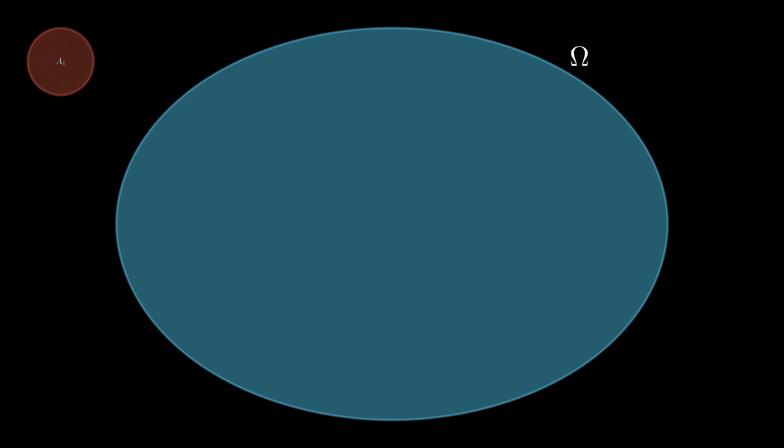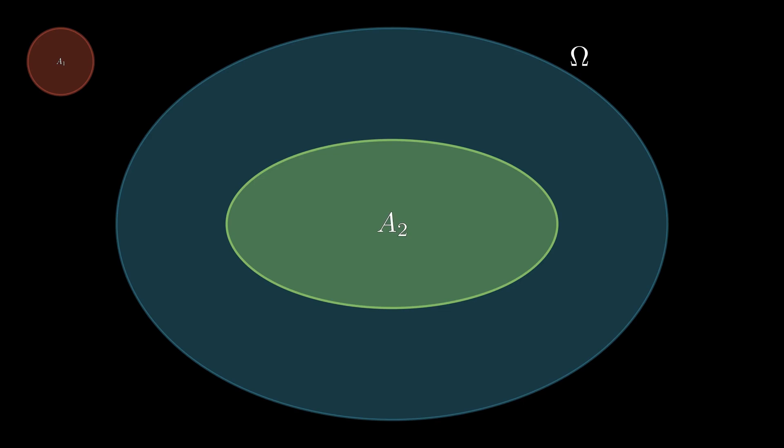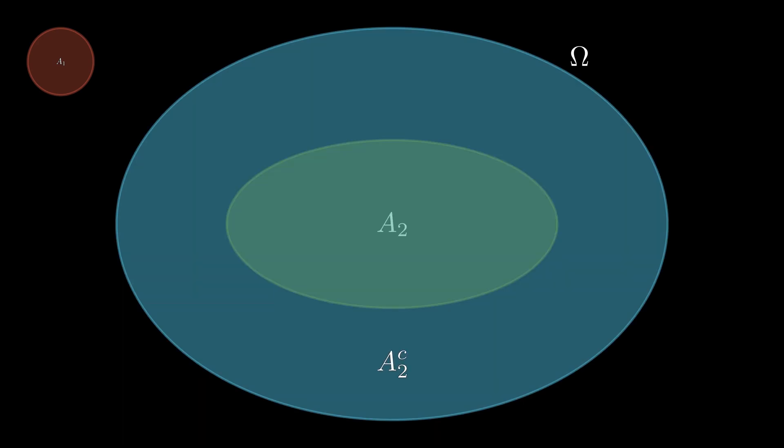And we can apply the same logic to other sets. We can have some set A2, as in the green. Now this is a subset within this bigger set, in the blue, and its complement is everything but A2.